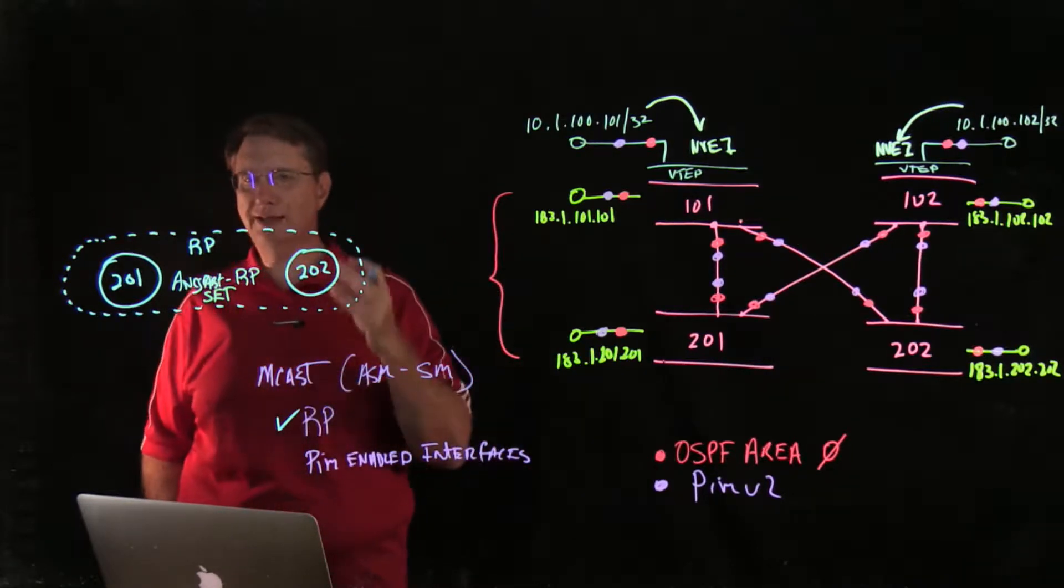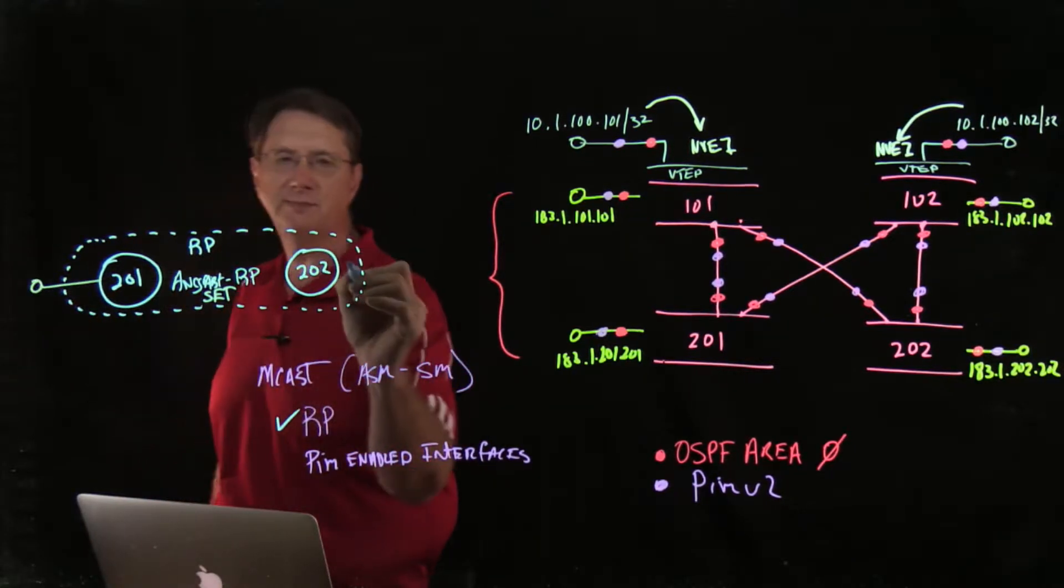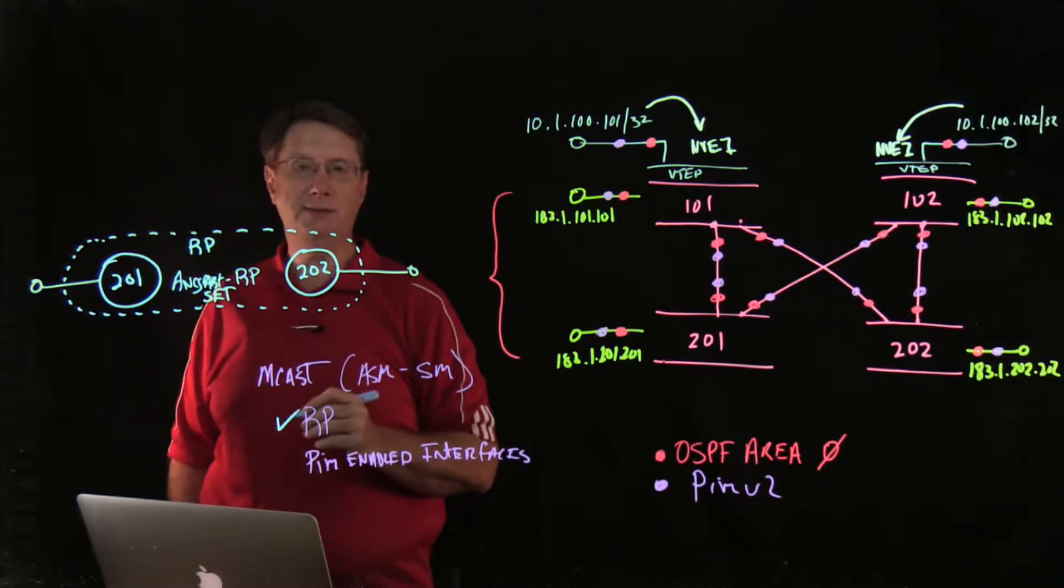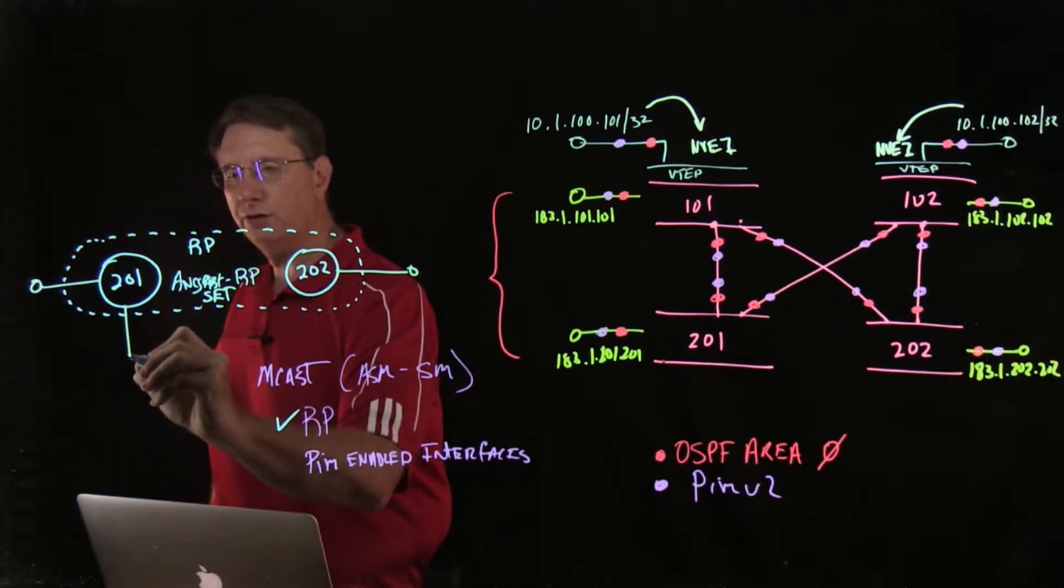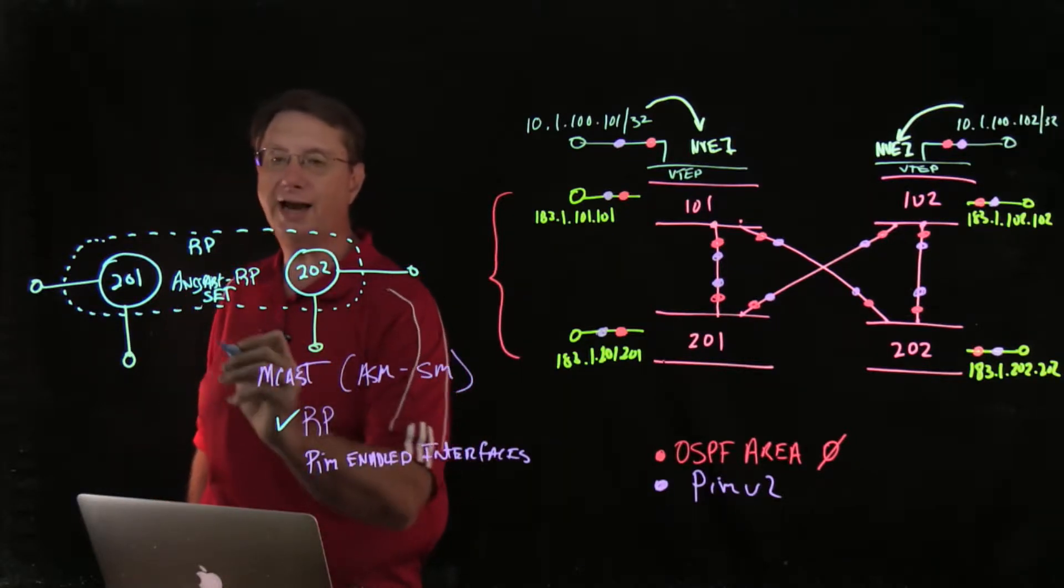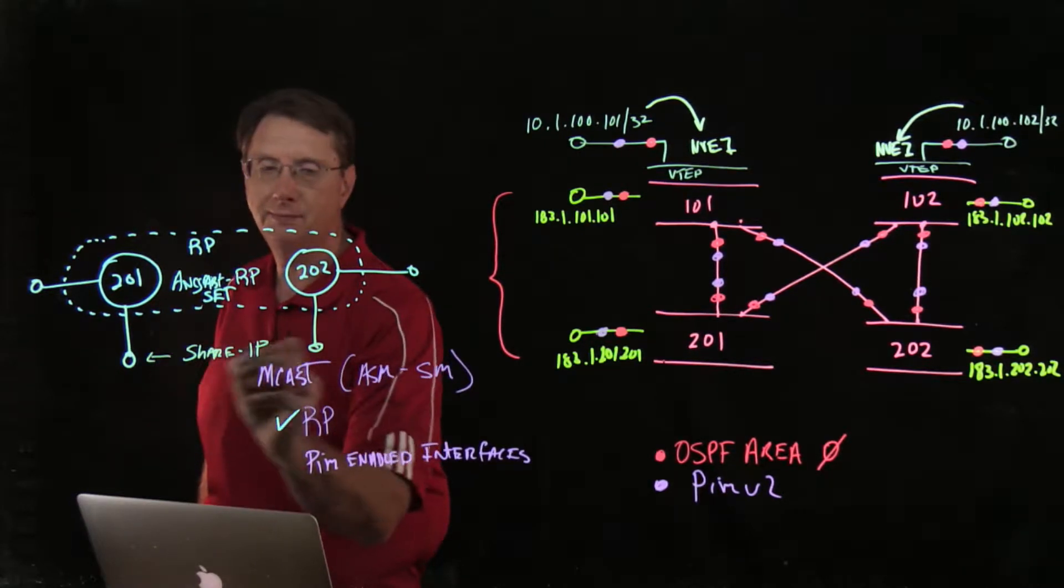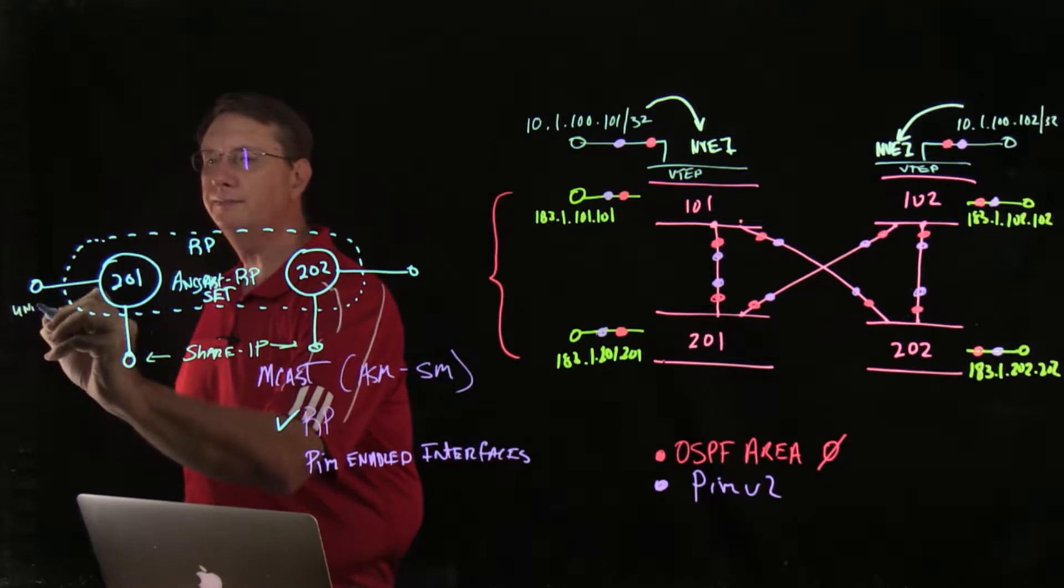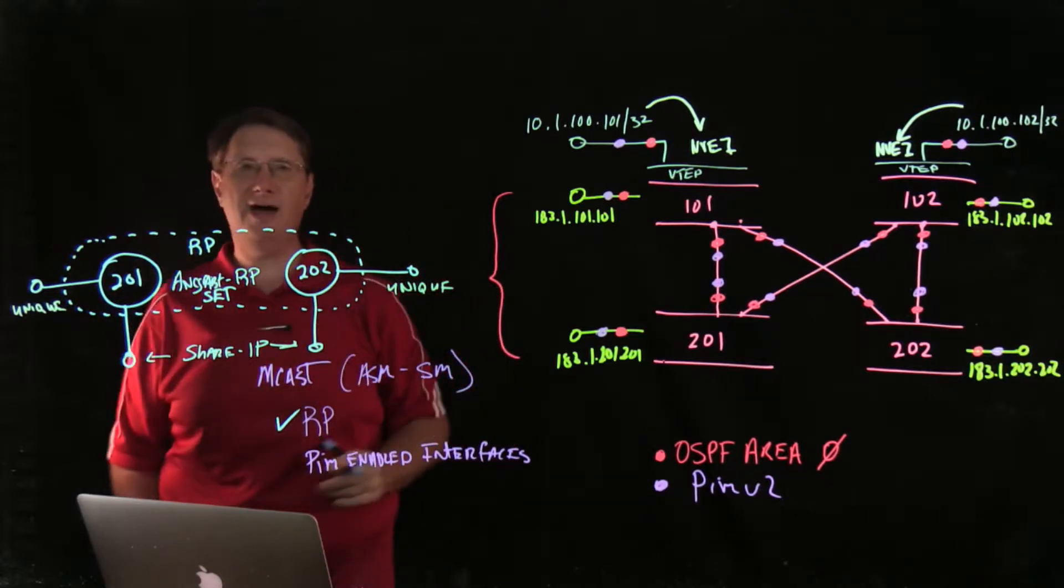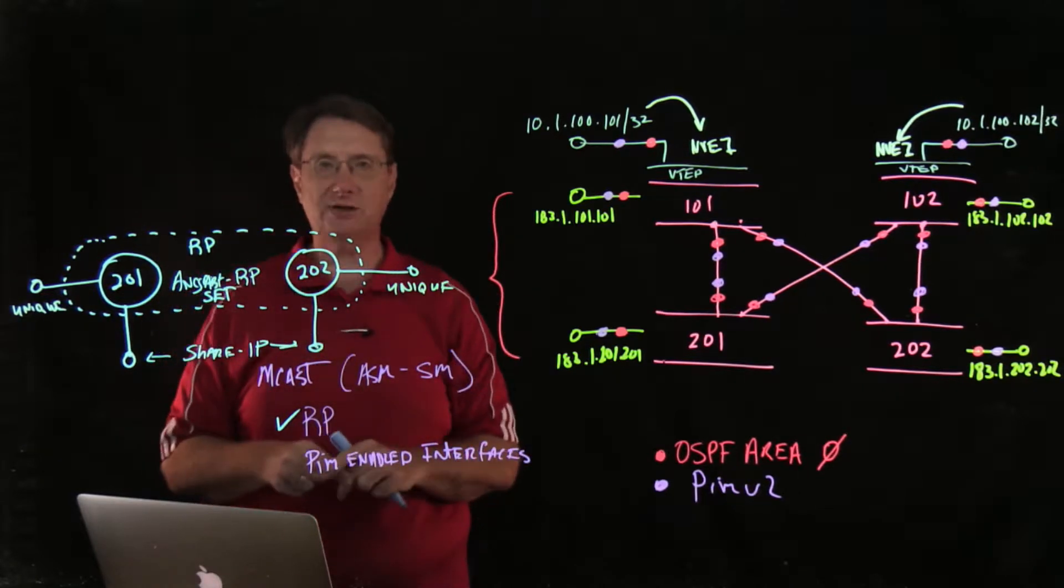Now what I need to do in order to be able to make this work is I need some interfaces. So we're going to create two sets of interfaces. The first interface is going to exist on each of these devices and it's going to use a unique addressing schema. Then I'm going to create an IP address and an interface, and these are going to actually share the same IP. So these will share IP. These will be unique. Now these unique variables are actually going to represent each of these individual devices inside of my Anycast RP set.